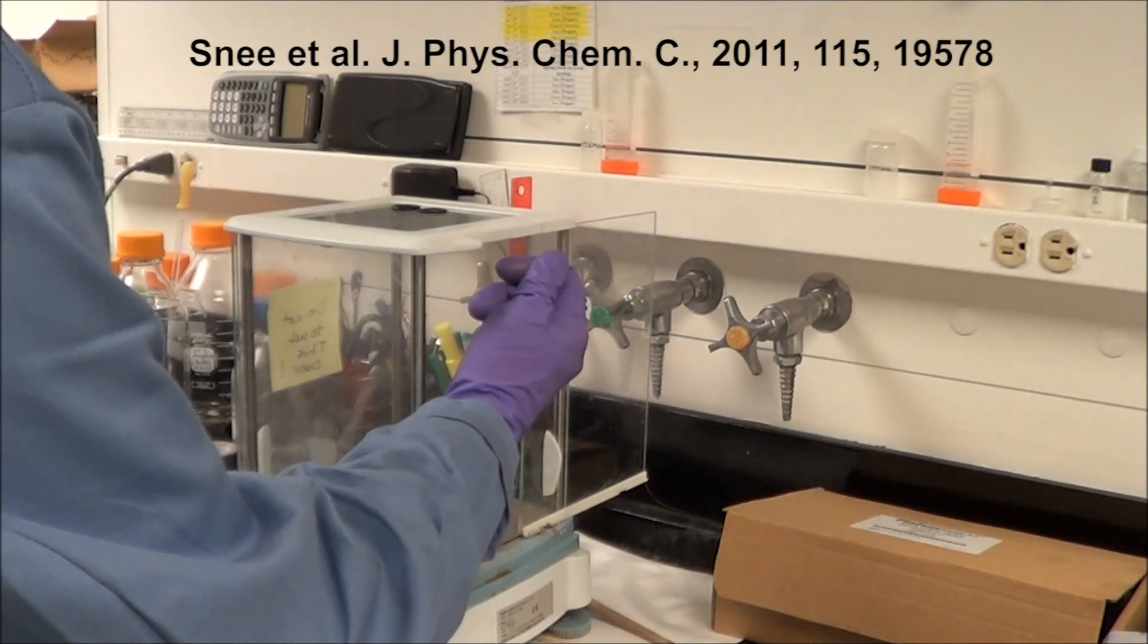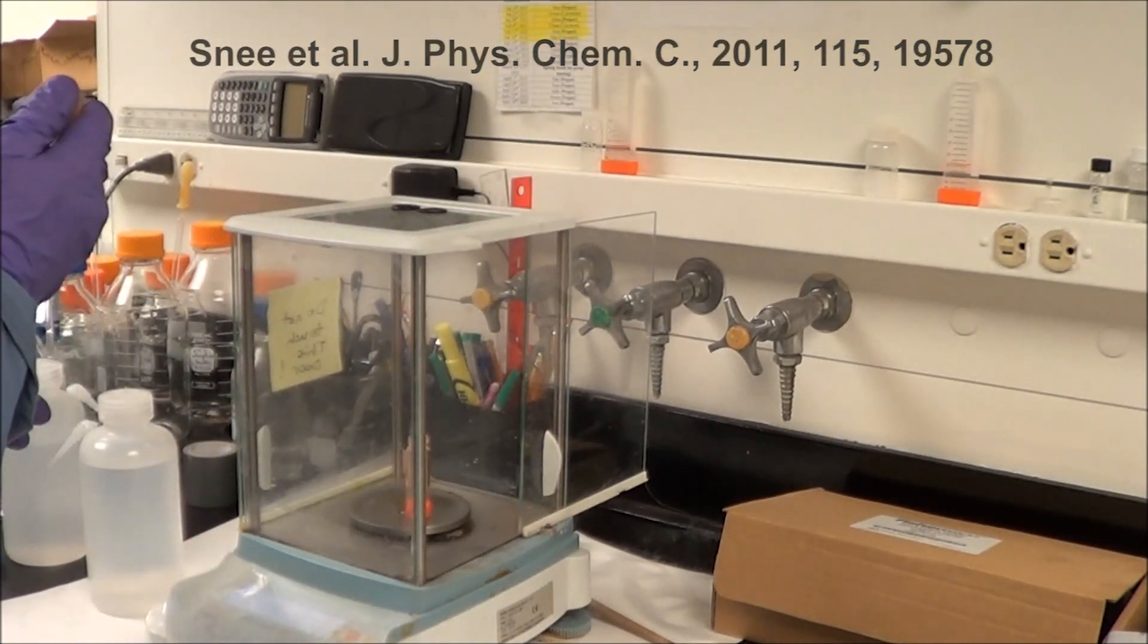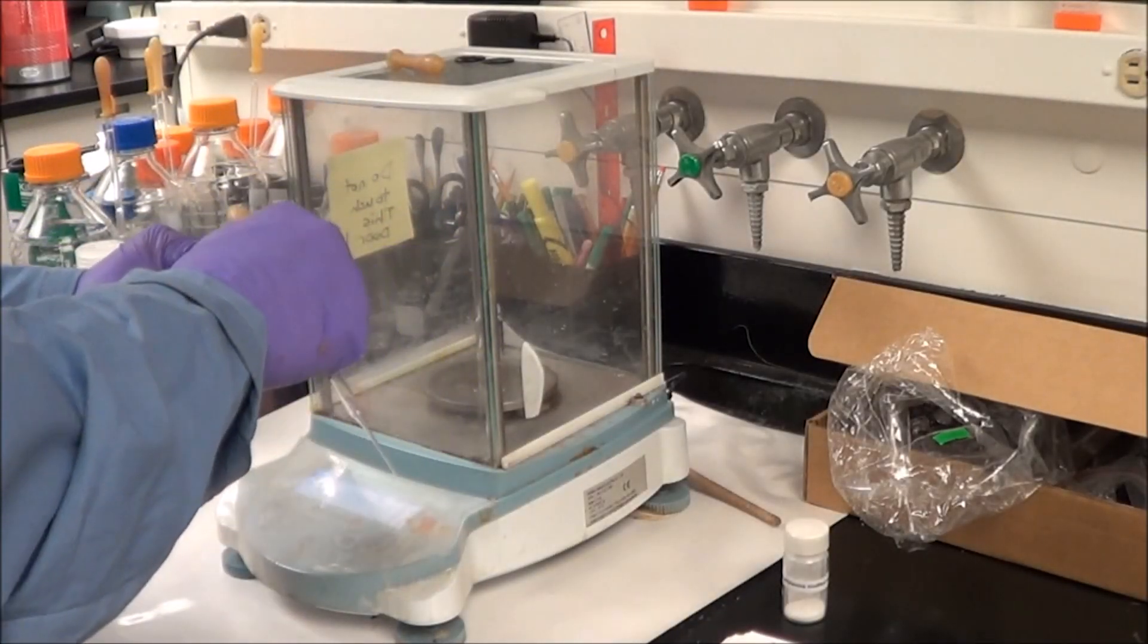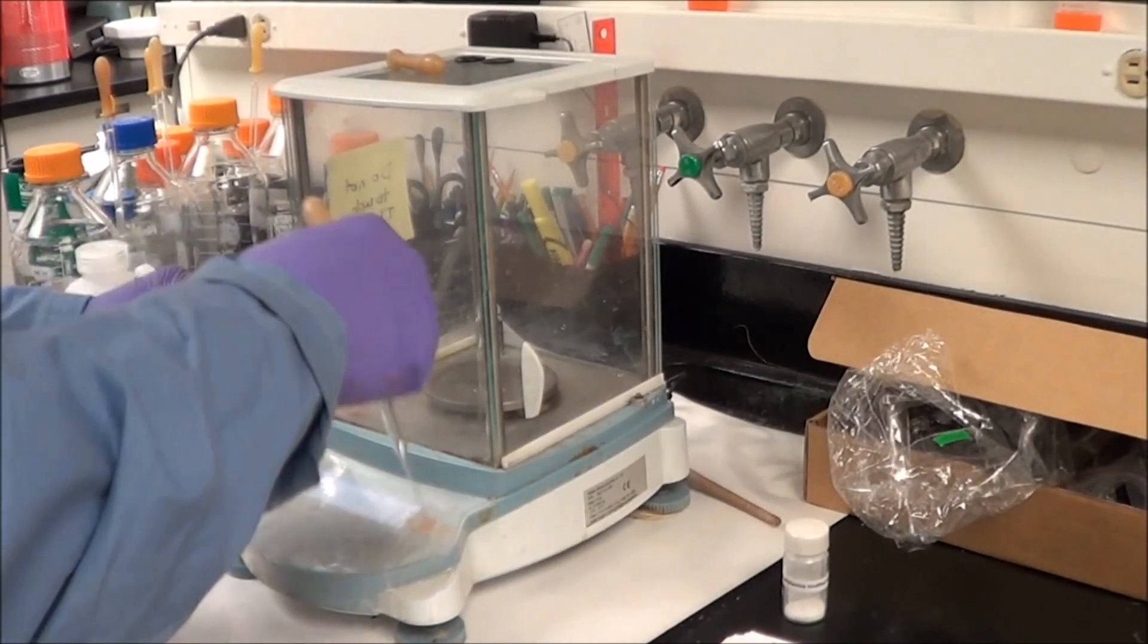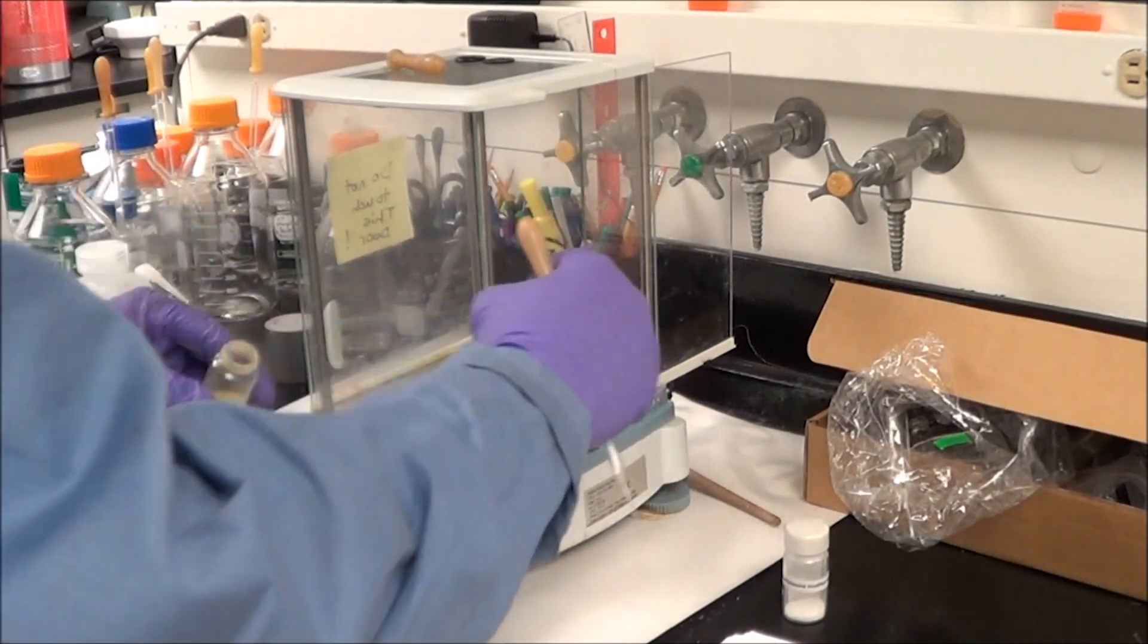We're starting out with cadmium selenide over coated with zinc sulfide quantum dots prepared according to the reference shown above. I am going to work with just half a gram of growth solution because I know how many quantum dots there are in every gram, and I don't like to try to water solubilize more than half a gram at once. It tends to hurt the phase transfer yields if I use too many dots at once.